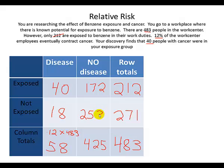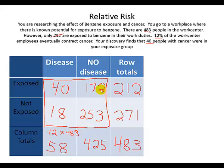Now we've filled in our 2×2 table. The 2×2 table is represented by the inner group of four cells, and the surrounding row and column totals give us ancillary information so that we can calculate what's inside the box.